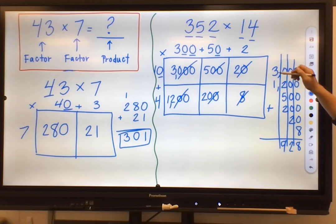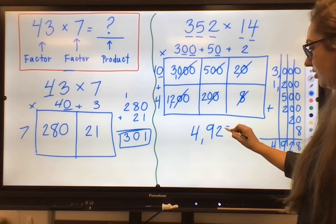2 plus 5, 7. 7 plus 2, 9. Drop that 9 down. And then 3 plus 1 is 4.